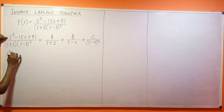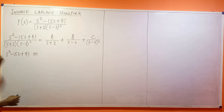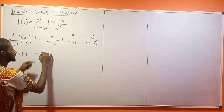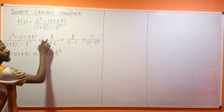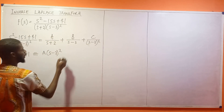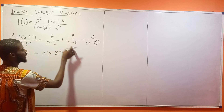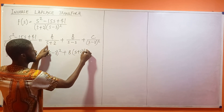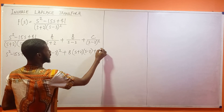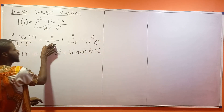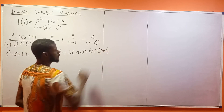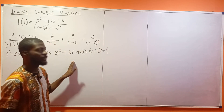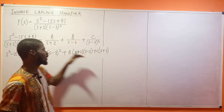This top here, s² minus 15s plus 41, is going to be equivalent to: A·(s-3)², plus B·(s+2)·(s-3), plus C·(s+2). Opening the brackets, this becomes A(s²-s-6·s+9) plus B(s²-s-6) plus C(s+2), which I can expand as A(s²-6s+9) + B(s²-s-6) + C(s+2).